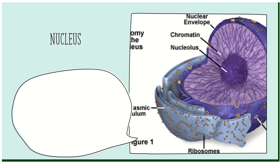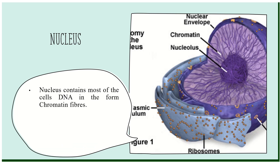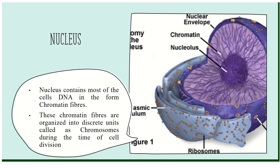Before going into all these topics, let me give a small introduction regarding the nucleus. The nucleus is a cell organelle which contains DNA in the form of chromatin fibers. The nucleus has a double membrane surrounding it with small gaps called nuclear pores. These chromatin fibers get condensed to form a structure called chromosomes only during the time of cell division. This is a very important point to note.